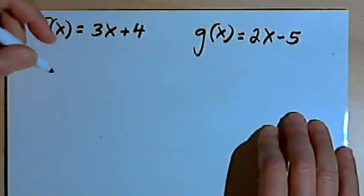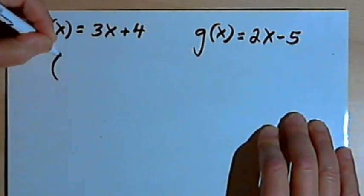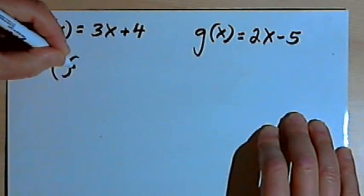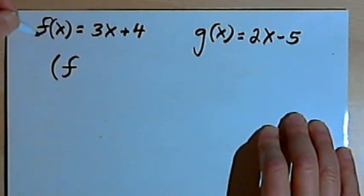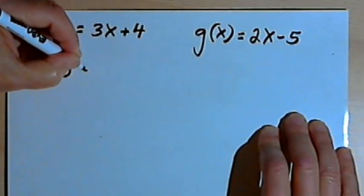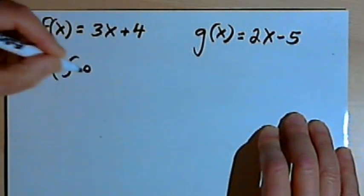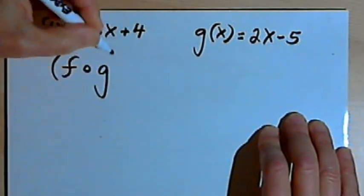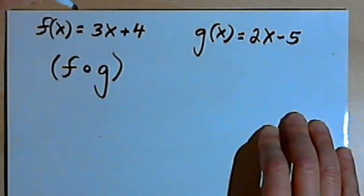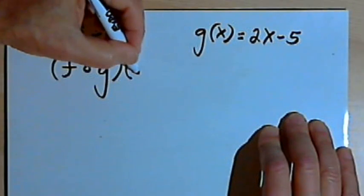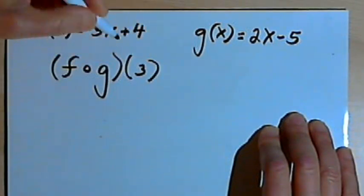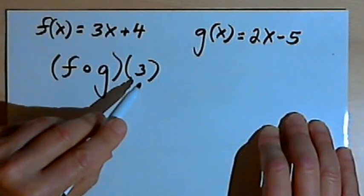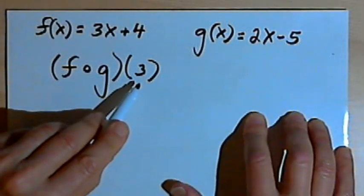Then I have a notation that looks like this. I've got a parenthesis, and inside the parenthesis I've got an f for function f, followed by a small open circle, then a g for function g, and that's the end of the parenthesis. Then I may have a parenthesis after that that contains a number, like a 3, or maybe it just contains a variable like an x.